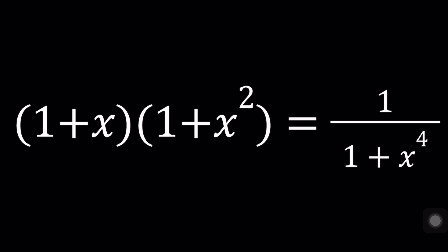We have 1 plus x multiplied by 1 plus x squared, and that is equal to the reciprocal of 1 plus x to the fourth power. We're going to be solving for x values. We're also going to be looking at the graph of two functions, so we can hopefully visualize what the solutions are going to look like. Are there any solutions? How many solutions do we have? Think about those things. We're about to start the solution.